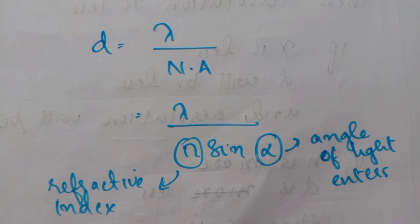Every medium, the refractive index varies. If the refractive index is more, then d will be less, and as a result, resolution will be more.